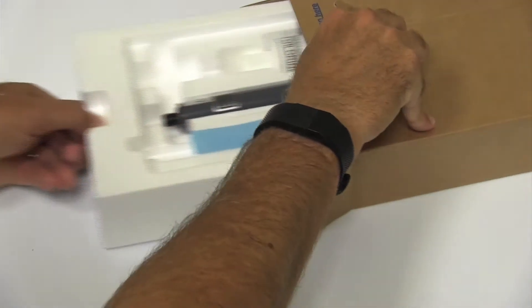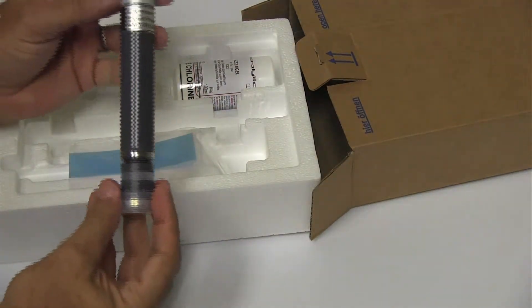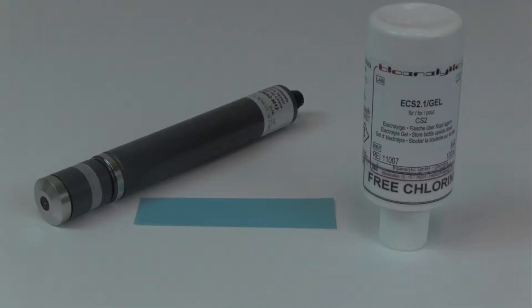It only takes a few minutes to assemble the sensor or to perform any routine maintenance. The sensor kit includes a probe with a membrane cap, a one-year supply of electrolyte, and a single piece of blue abrasive paper.